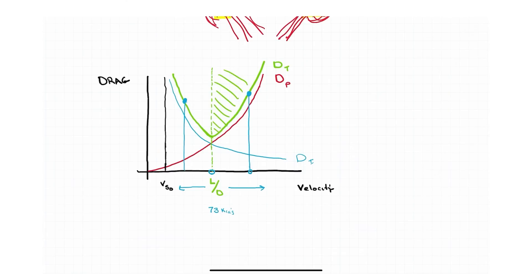This is the front side or the region of normal command. Over here, we call this the back side of the power curve. And this back side of the power curve is what we refer to oftentimes as the region of reverse command.